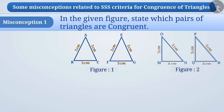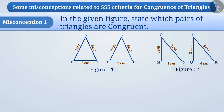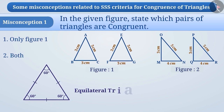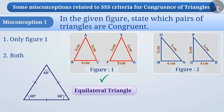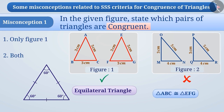Misconception 1: In the given figure, state which pairs of triangles are congruent. Some students fail to understand the SSS congruence rule properly. They believe that the SSS congruence rule is true only for an equilateral triangle. In the first figure, they see that both triangles are equilateral, and in the second figure the triangles are not equilateral, so they misjudge that only the triangles in figure 1 are congruent.